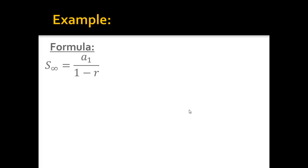So here's our formula, and we found that r was 1 fourth, which is 0.25, which is in between negative 1 and 1, so we're good. We can proceed.